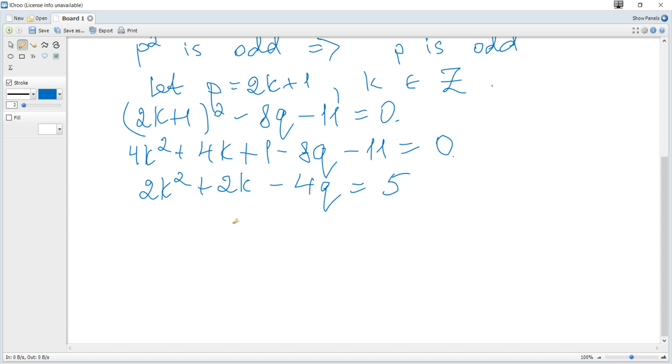We can see that the left-hand side is even, but the right-hand side is odd. So there is a contradiction, as the left-hand side is even but the right-hand side is odd.